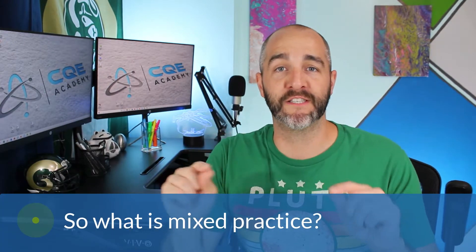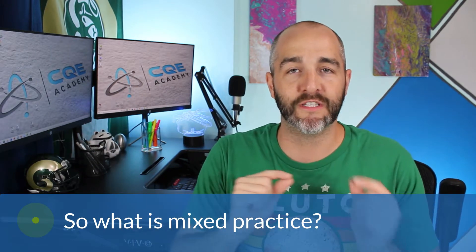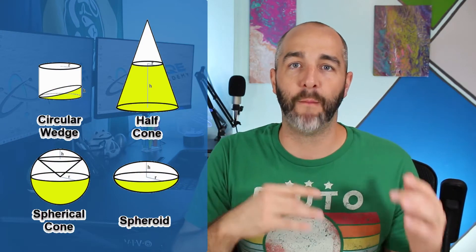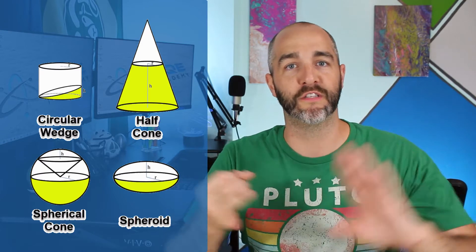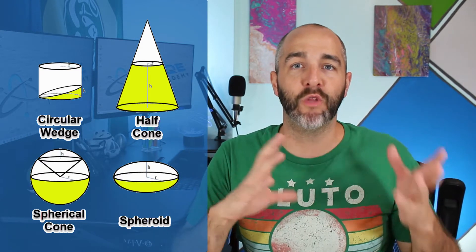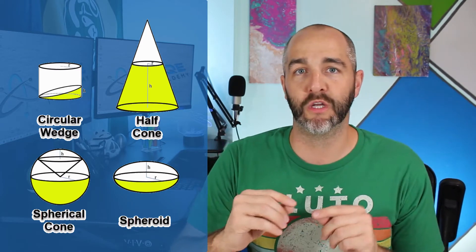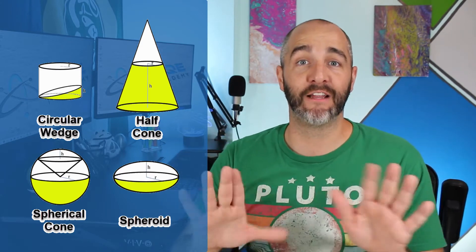Okay, so to help explain this idea, let me give you an example from the research. Let's say you were attempting to learn how to calculate the geometry of a really complex geometric solid, like a spheroid or a circular wedge or a spherical cone or a half cone, some really complex piece of geometry. There's kind of two different ways that you could learn and practice how to calculate that geometry. And this is exactly an experiment that a group of researchers performed.